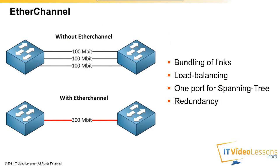First of all I want to show you EtherChannel. So what is EtherChannel? If you take a look at the two switches above, we've got two switches and there are three different Fast Ethernet links between them. What I can do with EtherChannel is combine these three links and turn them into a logical, virtual link. The good thing is it will do load balancing between the three different links, and we can also combine the bandwidth, so this single EtherChannel will become a 300 Mbit link.